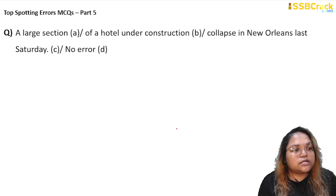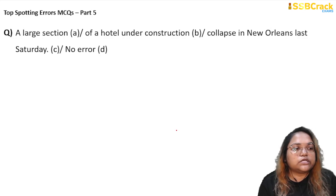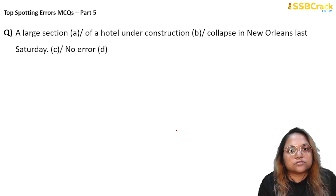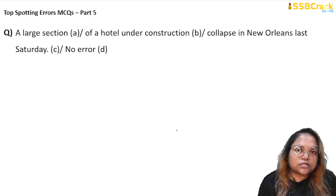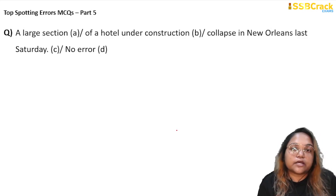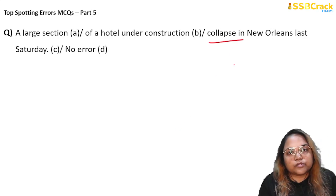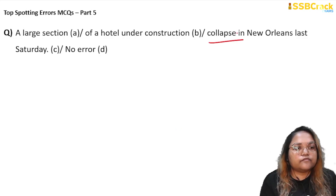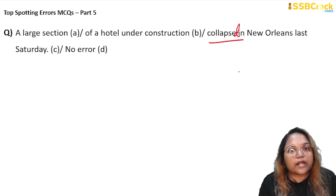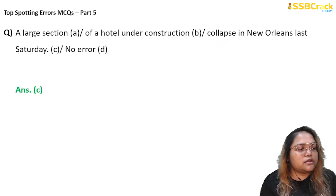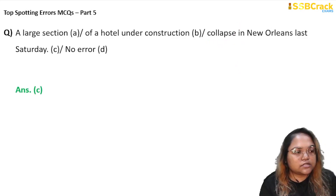Next question: 'A large section of a hotel under construction collapse in New Orleans last Saturday.' This is also a very easy error. It happened last Saturday — already in the past — but the present form of the verb 'collapse' is used, which is wrong. We need to use simple past tense: 'collapsed.' So the error is in part C, and that is our answer.